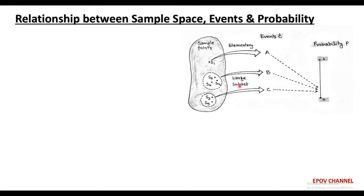Also, there is an event corresponding to a larger subset. For example, for the event statement of an even number of dots showing, event B corresponds to a subset of 3 sample points: S2, S4 and S6. Similarly, the subsets S3 and S5 map to event C, based on the event statement of an odd number of dots greater than 1. So the subset consists of only two sample points, S3 and S5.